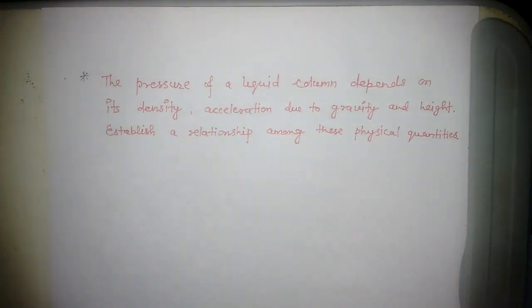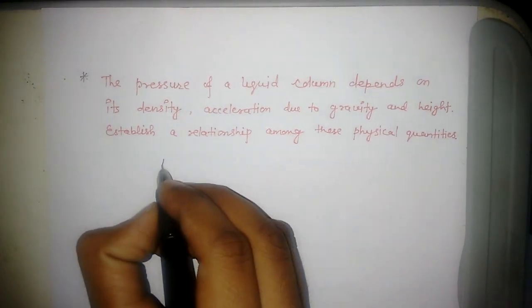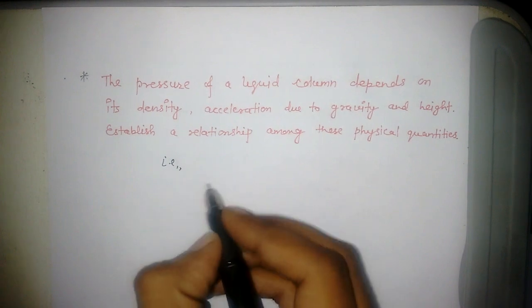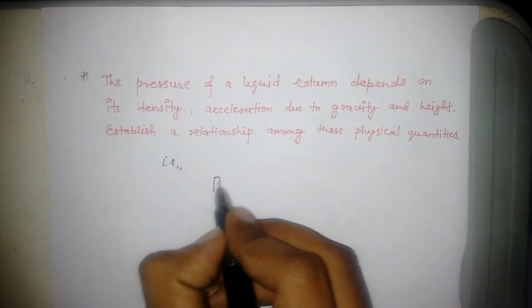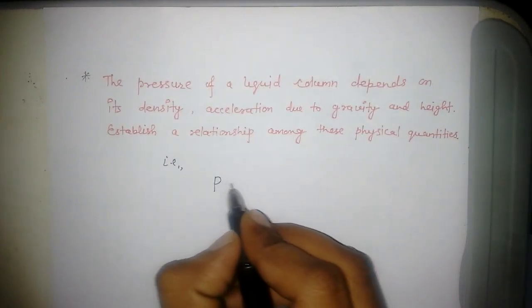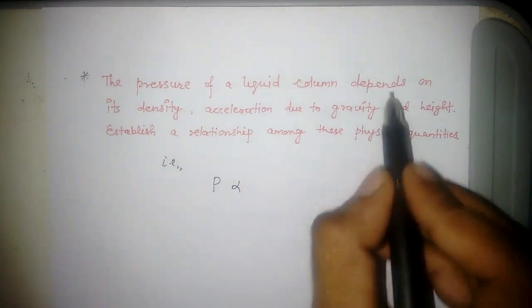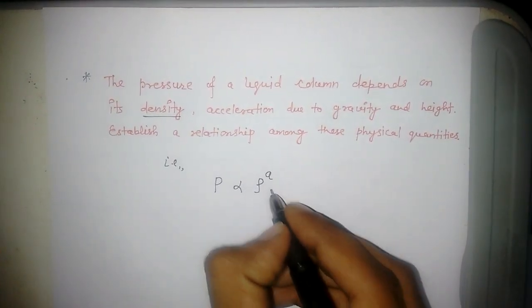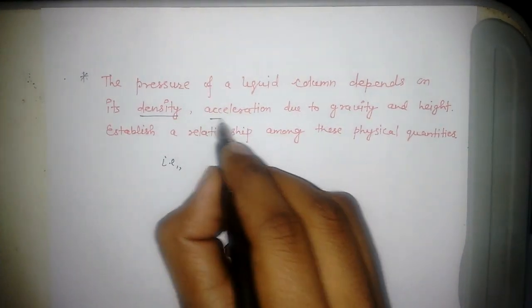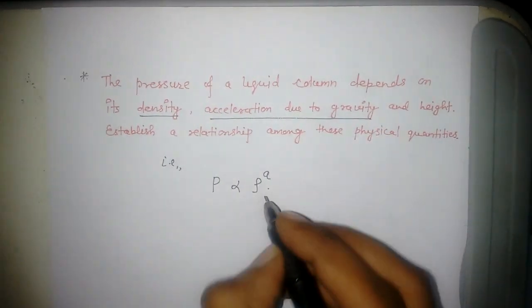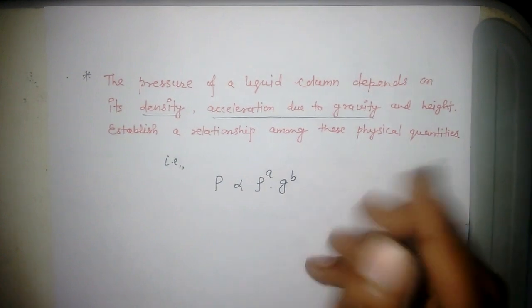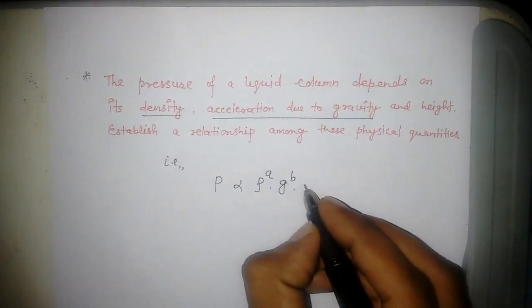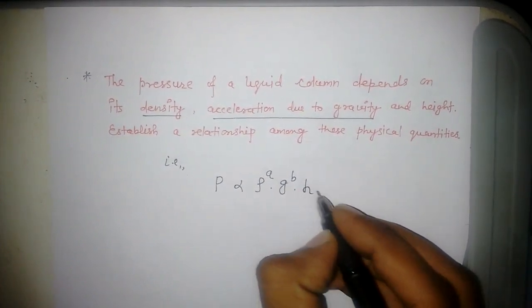Mathematically, pressure P is directly proportional to density. So P ∝ ρ^a, where ρ is density to the power a, acceleration due to gravity g to the power b, and height h to the power c.